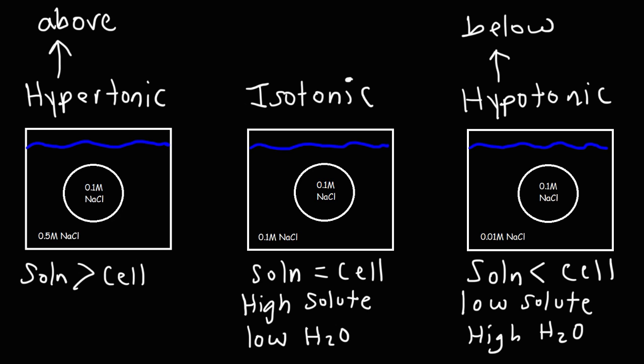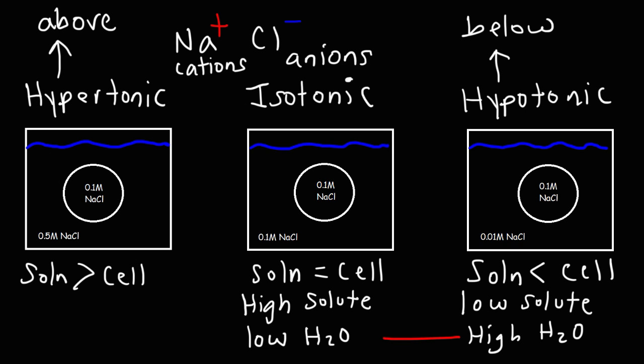Here we have a sodium chloride solution, made up of sodium ions and chloride ions. Sodium ions have a positive charge; chloride ions have a negative charge. Positively charged ions are known as cations; negatively charged ions are known as anions. Osmosis is the diffusion of water — the net movement of particles from a region of high concentration to a region of low concentration. Water, being polar, is attracted to ions, so it will flow toward the solution with a higher concentration of ions.